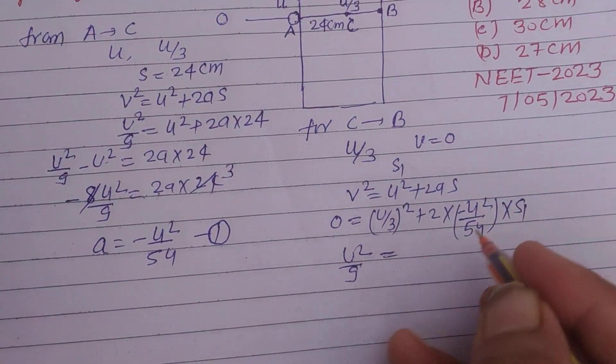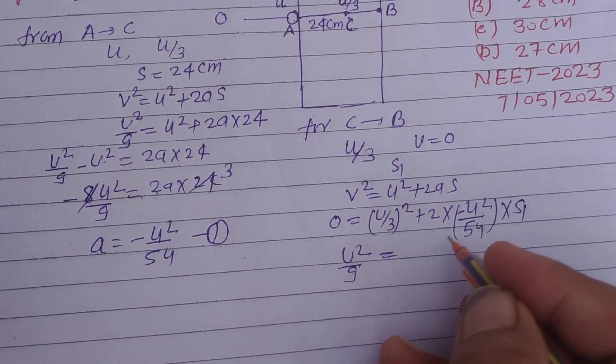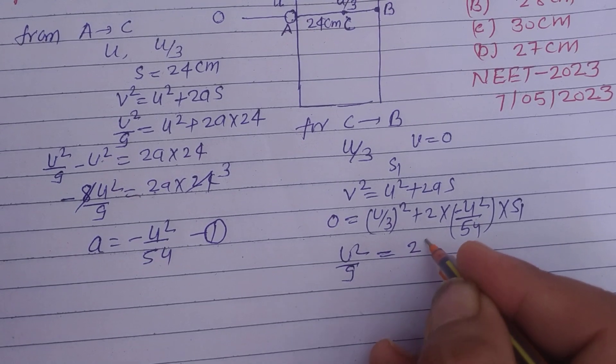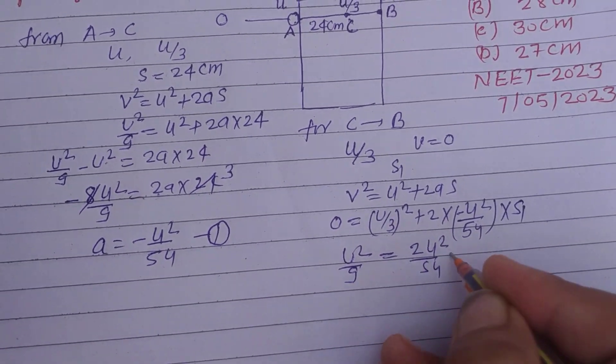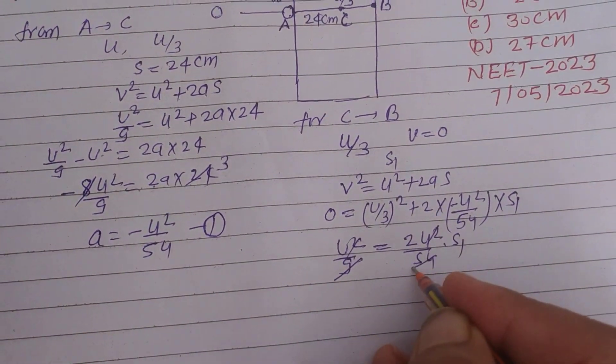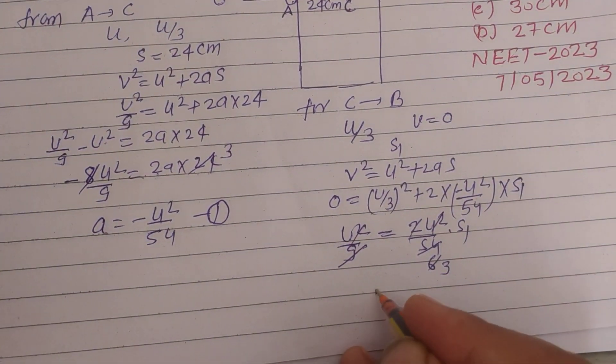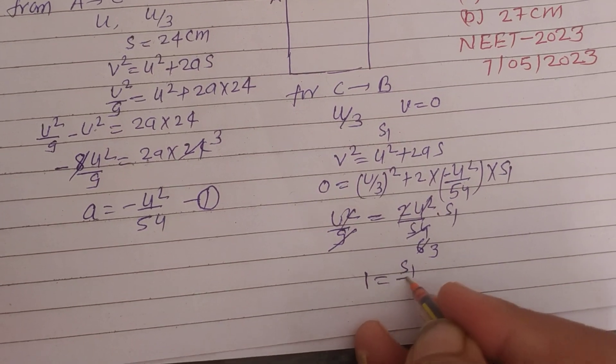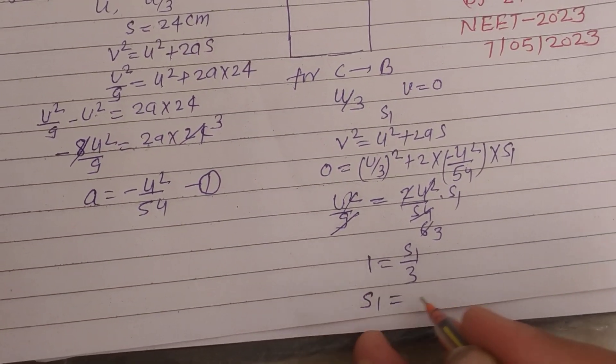U² by 9, we bring this part to this side so this becomes 2U² upon 54 into S1. Through calculation, 1 equals S1 upon 3, therefore S1